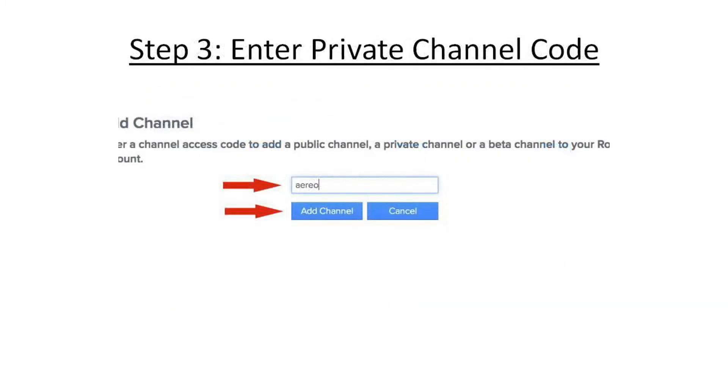Next, you'll want to enter your private channel's code. In the example here, I've entered the code for the Aereo channel. Then click on the Add Channel button.